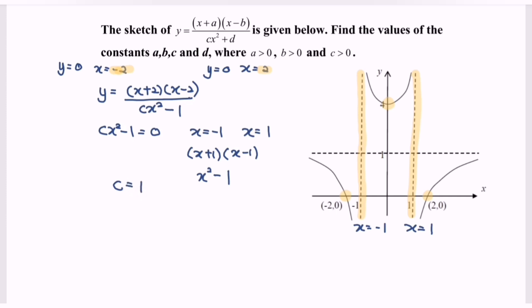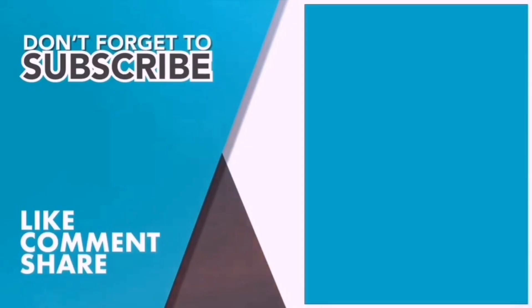So from here, the value of a is equal to two, value of b is equal to two, value of c is equal to one, and value of d is equal to negative one. Thank you so much for watching this video. If you think the video is useful, kindly consider to like, comment, share, and subscribe.